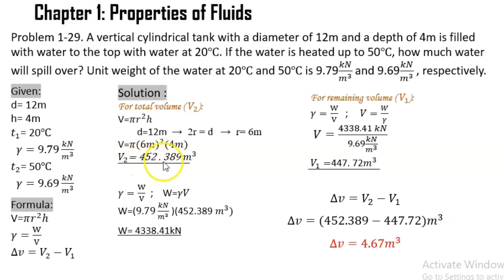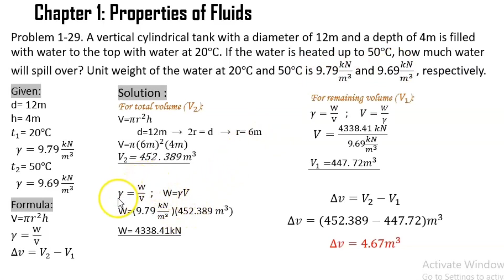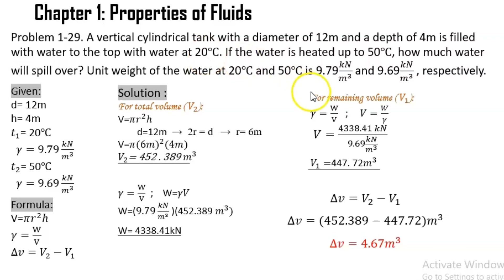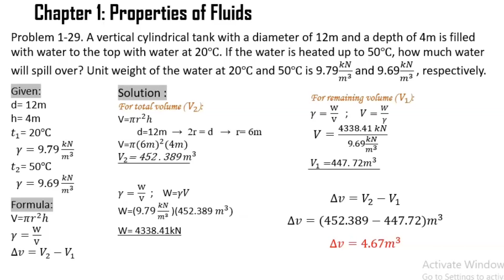Now that we are done calculating our total volume, we can proceed to solving for the remaining volume. However, in our problem, only the specific weight is given. So we need to first find the value of our weight using the equation for specific weight, deriving it as: weight equals specific weight times volume. Substituting, the specific weight at 20 degrees Celsius is 9.79 kN per meter cube, multiplied by the total volume of 452.389 meter cube, giving us a weight of 4,442.39 kN. The meter cube units cancel, leaving kilonewtons.